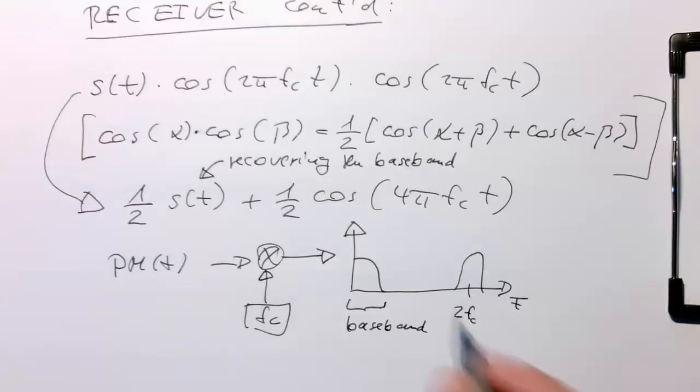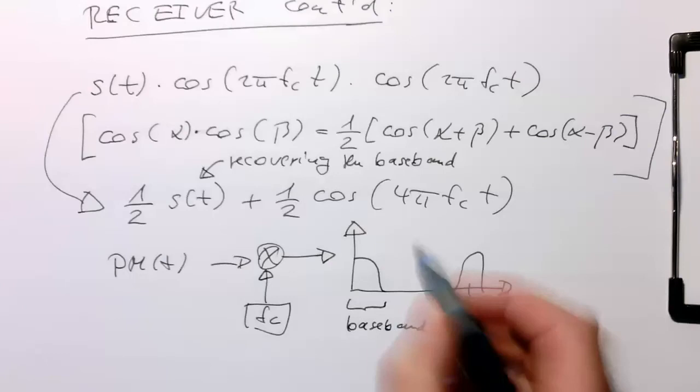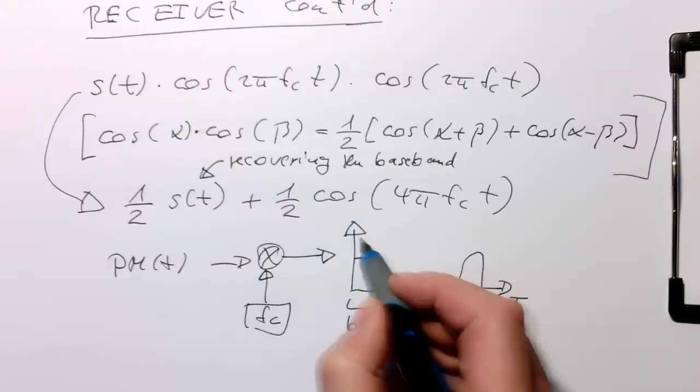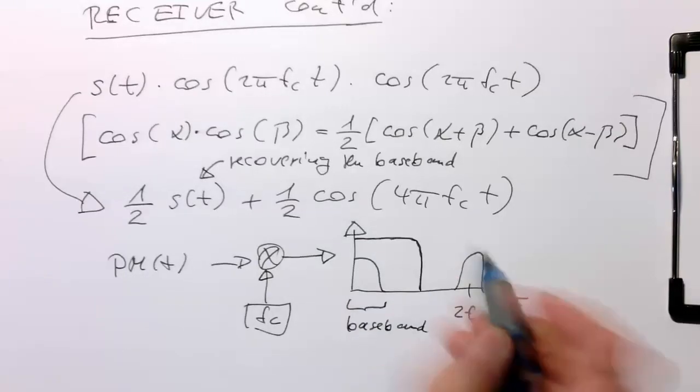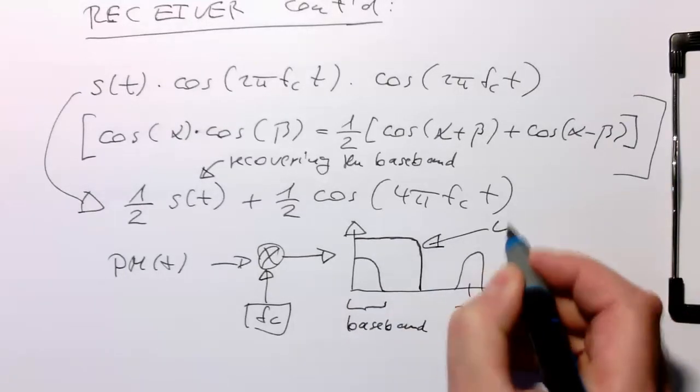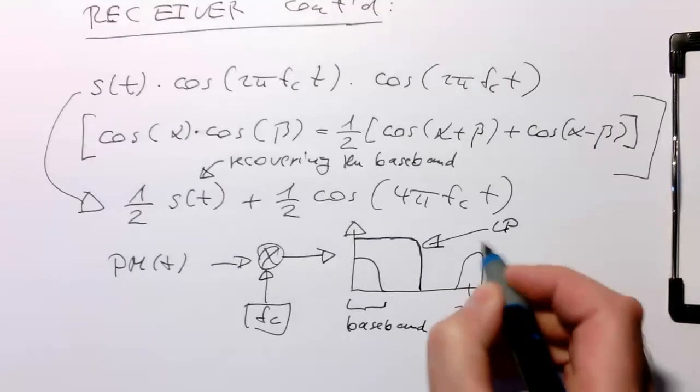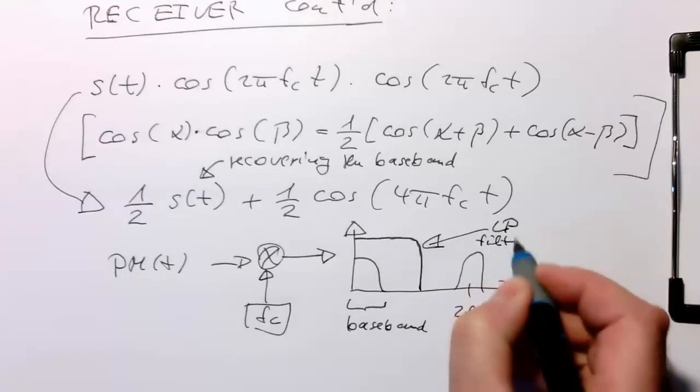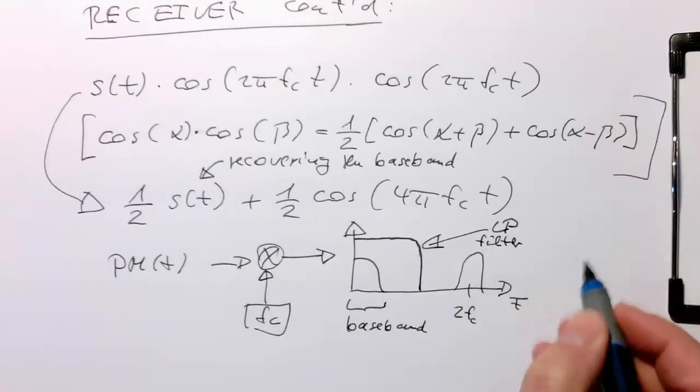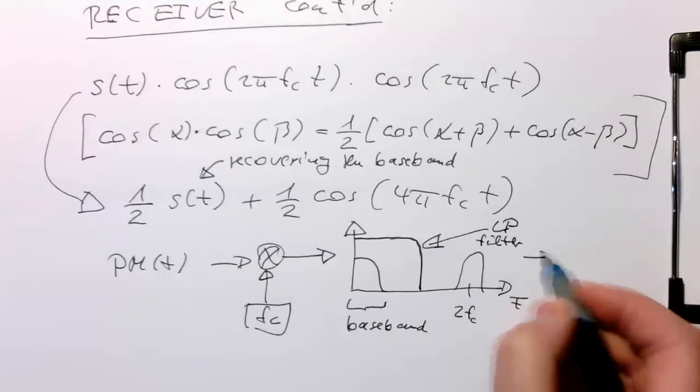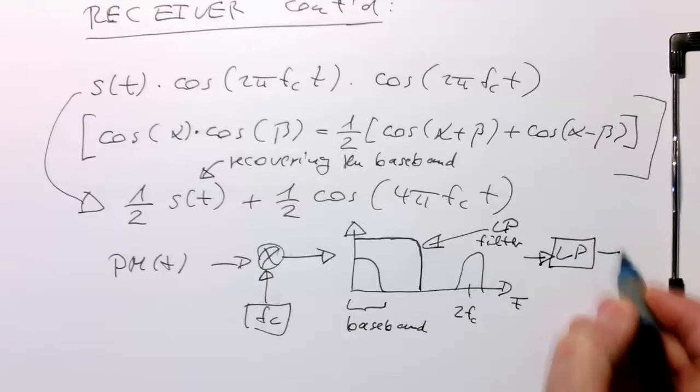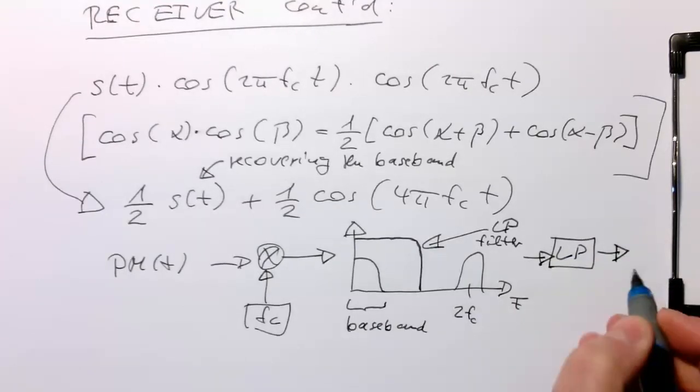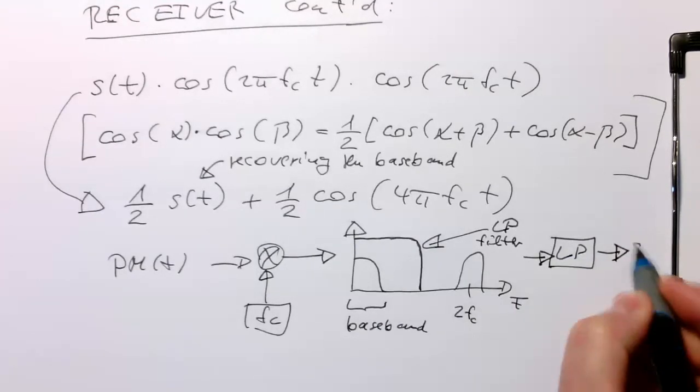The only thing we need to do to get the baseband back is add a low-pass filter. If this is a low-pass filter, we get our baseband back. We filter via low-pass, and the output is our s(t) again.